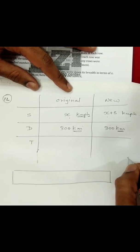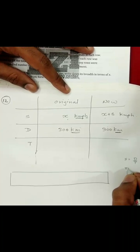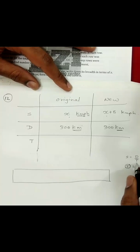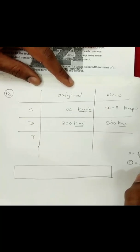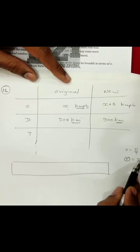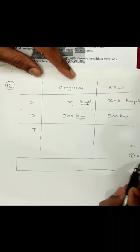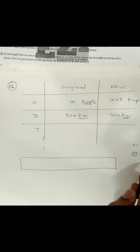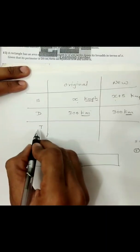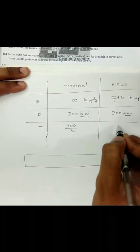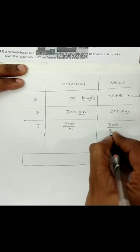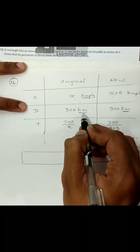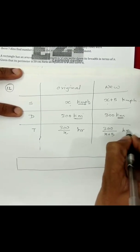You must have learned that speed equals distance upon time. So, time becomes distance upon speed. The time in the original case will become 300 upon x, and in the new case, the time will become 300 upon x plus 5. The units for time will be hours, since distance is in kilometers and speed is in km per hour.